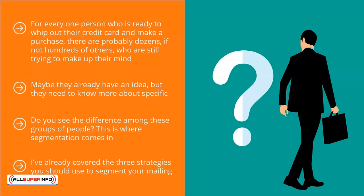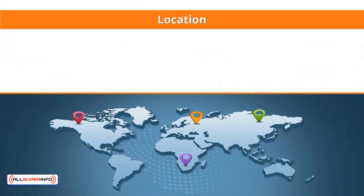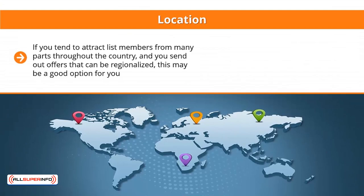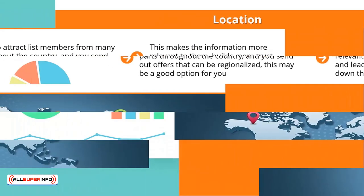The following segmentation strategies are more detailed — implement them after you've done the three main strategies listed above. You can segment your list members' emails using the following criteria. Location: If you tend to attract list members from many parts throughout the country and you send out offers that can be regionalized, this may be a good option. Send only updates related to a specific region to people who live there. This makes the information more relevant to them, builds more trust, and leads to greater conversions down the road.